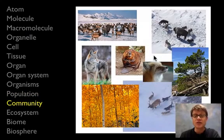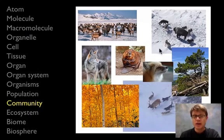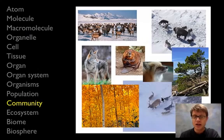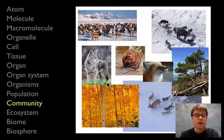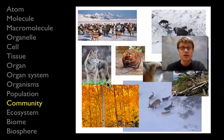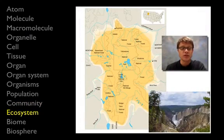Next we have all of these different populations interacting together, and that would be a community. It's all biotic at this point — all living things. We're going to have predation, competition, and parasitism. So we have all these interactions between different populations at the level of a community.